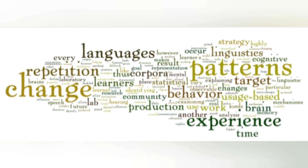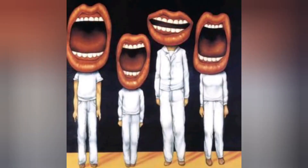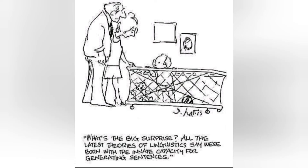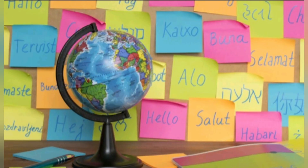In brief, language is a complex adaptive system that comprises the interactions of many players: first, people who want to communicate, and second, the world to be talked about. It operates across many different levels, different human configurations, and different timescales.